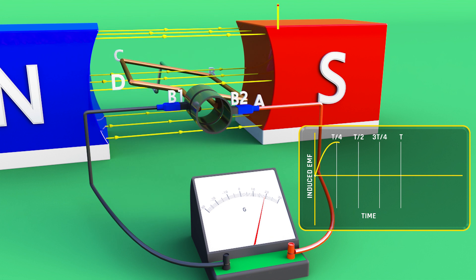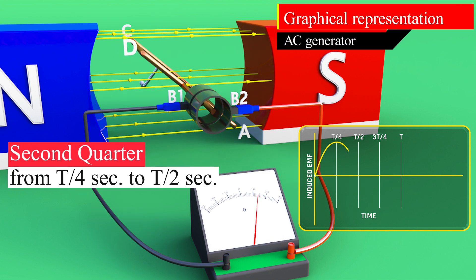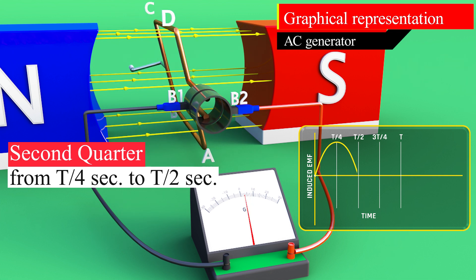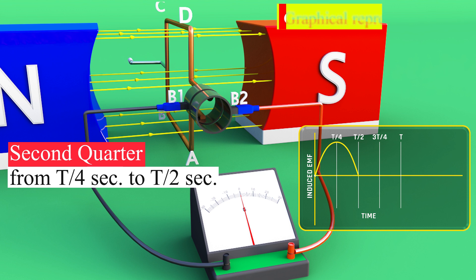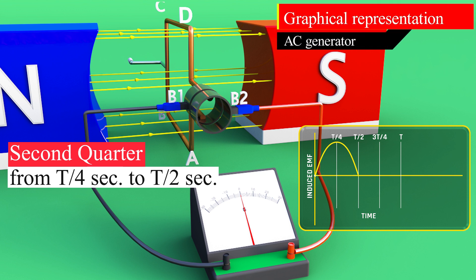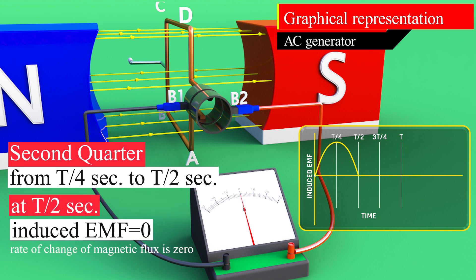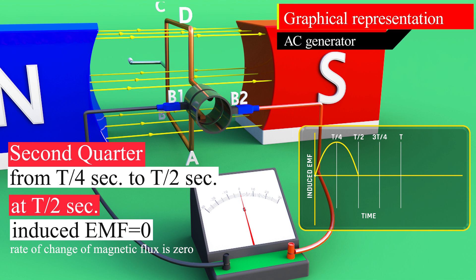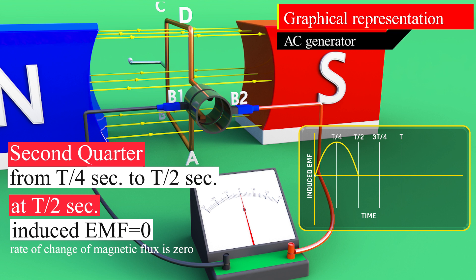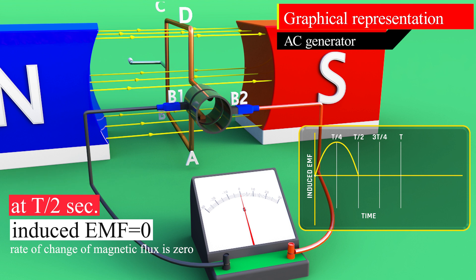During the second quarter of rotation, from T/4 to T/2 seconds, the induced EMF decreases from its maximum value to zero. At T/2 seconds, the armature is again in a vertical position, with part AB down and part CD up. Parts AB and CD move parallel to the magnetic field, so the rate of change of magnetic flux is zero. Therefore, the induced EMF is zero.